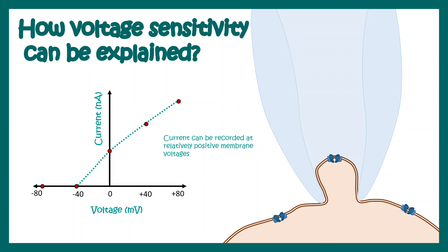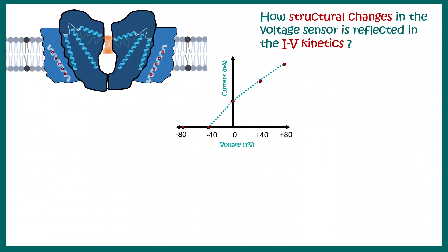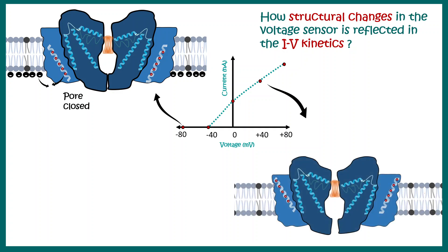To understand what happens at different voltage ranges: at minus 80 millivolts the inside of the membrane is highly negative, so the positive charges in the voltage sensor are attracted inward, keeping the pore in a closed state. But at a positive membrane voltage such as plus 40 millivolts, the inside becomes positive, causing net repulsion of the voltage-sensitive helix outward, leading to an open configuration of the potassium channel.